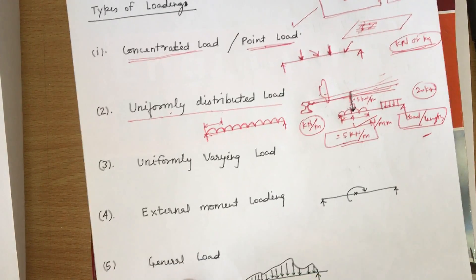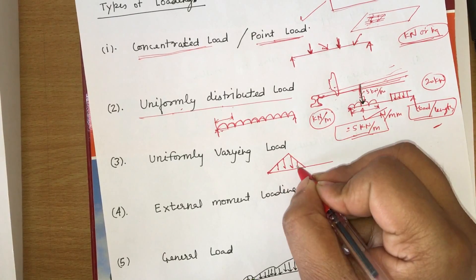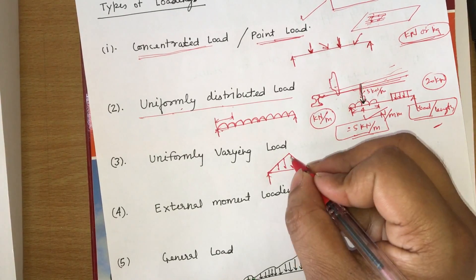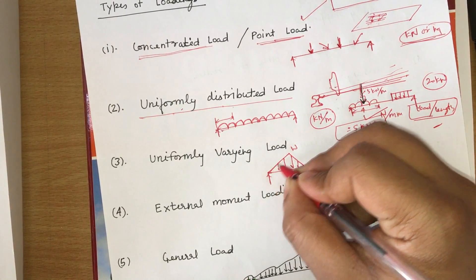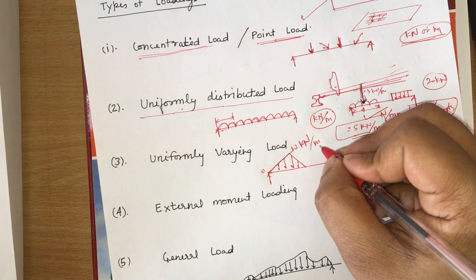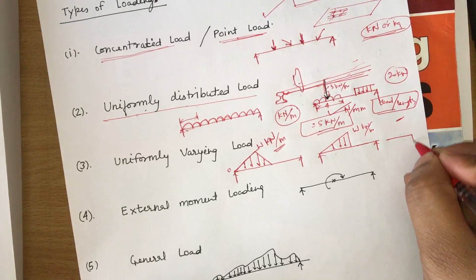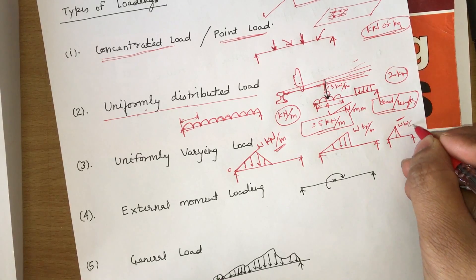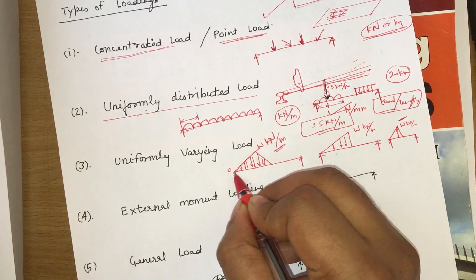Uniformly varying load (UVL) means the load varies uniformly — it is a triangular loading, varying from 0 to a maximum intensity W. The unit of W is kilonewton per meter. The load can be shown as a triangle in diagrams. To calculate the total effect of this loading, you calculate the area of the loading diagram.